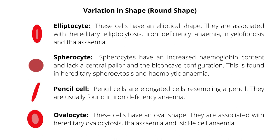Pencil cells are elongated cells resembling a pencil. They are usually found in iron deficiency anemia. Ovalocytes have an oval shape and are associated with hereditary ovalocytosis, thalassemia, and sickle cell anemia.